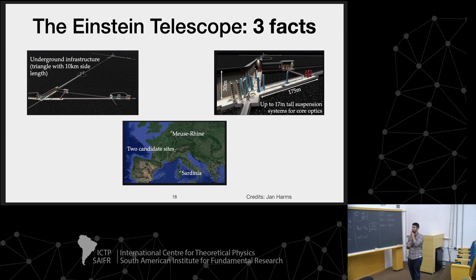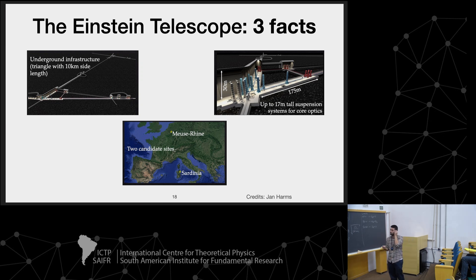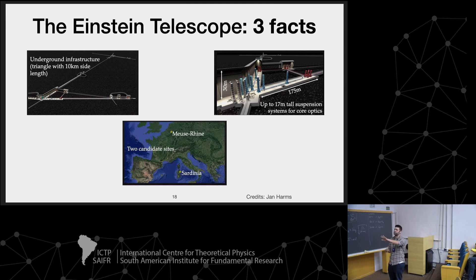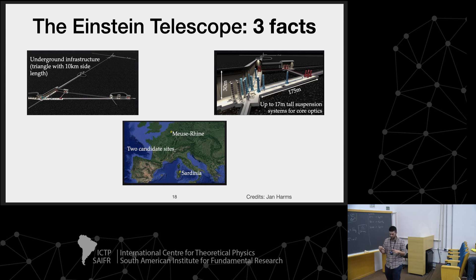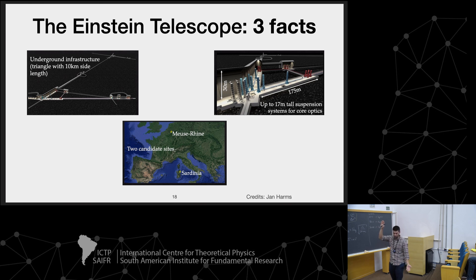Three facts about the Einstein Telescope. First, it's going to be an underground infrastructure. The most commonly described shape is a triangle with 10-kilometer sides. Current detectors have arm lengths of 4 kilometers for LIGO and 3 kilometers for Virgo. So here we are looking at an enormous infrastructure built underground, with suspension systems of 30 meters — a ginormous infrastructure.